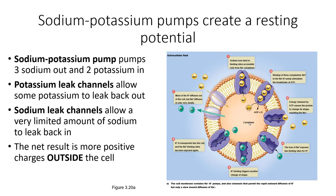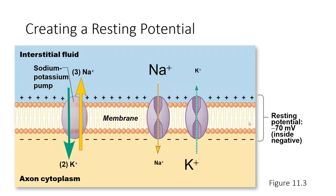They are going up their concentration gradient instead of down, so it takes energy. Potassium is then going to come back in — two potassium are going to come back in via the sodium-potassium pump. This means there will be more potassium inside the cell and more sodium outside. There are potassium leak channels which allow potassium to go back out, and sodium leak channels which allow a very limited amount of sodium to leak back in. The net result is a more positive charge outside and a more negatively charged inside the cell.